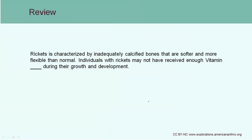Review question: rickets is characterized by inadequately calcified bones that are softer and more flexible than normal. Individuals with rickets may not have received enough vitamin blank during their growth and development — which vitamin was it? The answer is vitamin D, which you can produce in your own skin. In modern diets we're also able to take vitamin supplements to get our vitamin D that way.